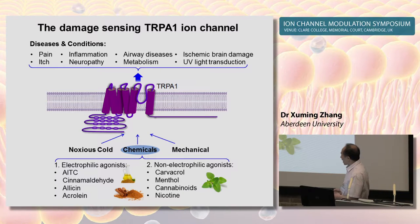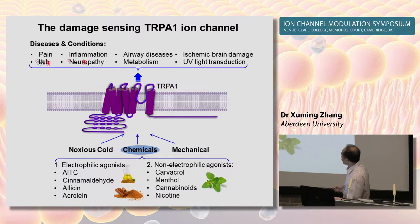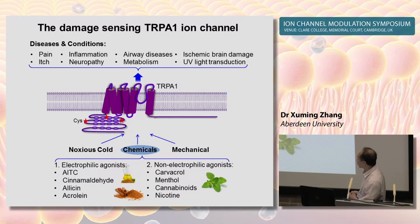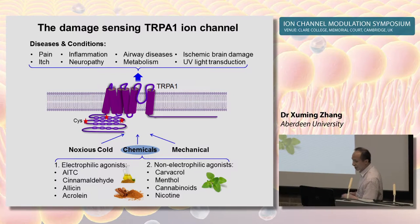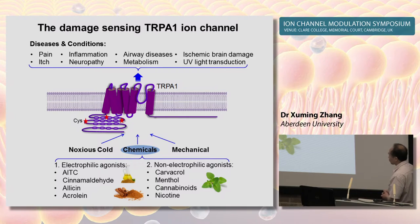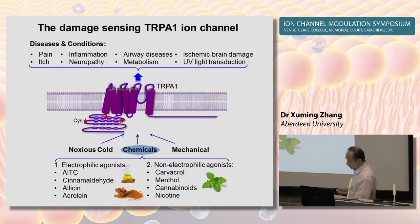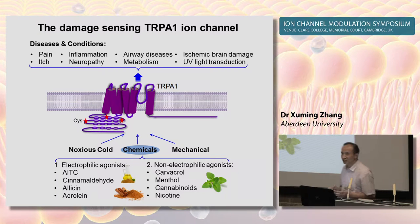Electrophilic agonists, such as AITC from mustard oil, are reactive and open TRPA1 through covalent modification of cysteine residues on the N-terminals of TRPA1, so any chemicals able to react with these cysteine residues could open the channel. However, non-electrophilic agonists, such as carvacrol from oregano plants, open TRPA1 through direct binding to the channel. These mechanisms partially explain the diversified function of these ion channels.